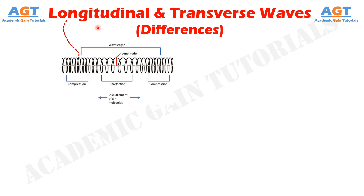Longitudinal waves, also referred to as compression waves, are waves in which the displacement of the medium is in the same direction as, or the opposite direction to, the direction of propagation of the wave. A longitudinal wave has a compression — increased intensity of the medium particles — and a rarefaction — a reduction of intensity. A typical example of a longitudinal wave is a sound wave or shock wave.